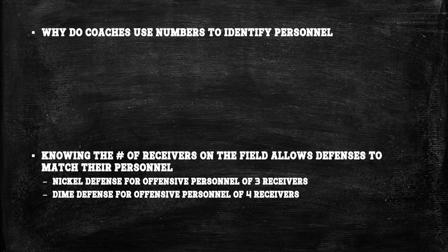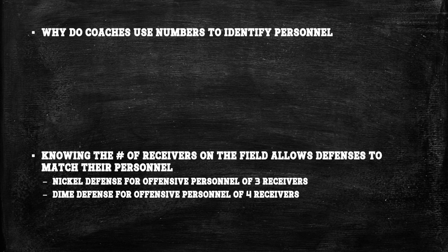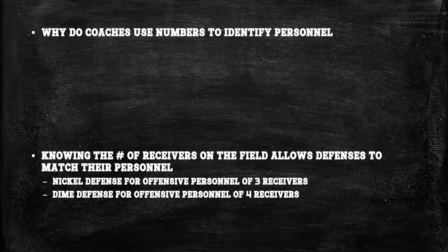That's what it means and why they do it — to quickly identify the offensive personnel and adjust accordingly, fast enough that they're not trying to figure out who's a tight end on the fly. They've got it identified and can run what they need in a quick manner. Hopefully this video helped you out. Now if you're ever listening to a broadcast and they say the offense was in 13 personnel, you'll know exactly what that means: one running back, three tight ends — and you can tell your friends.